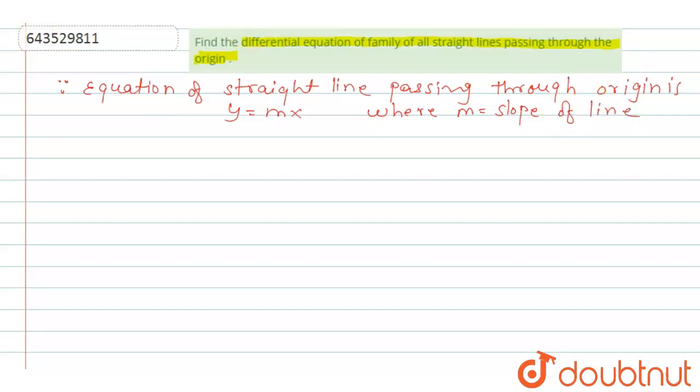Since y equals to mx, so differentiate both sides with respect to x. We get here dy by dx is equals to m.